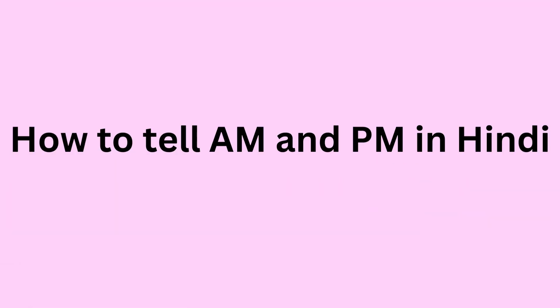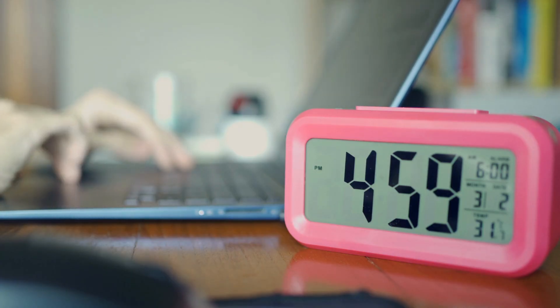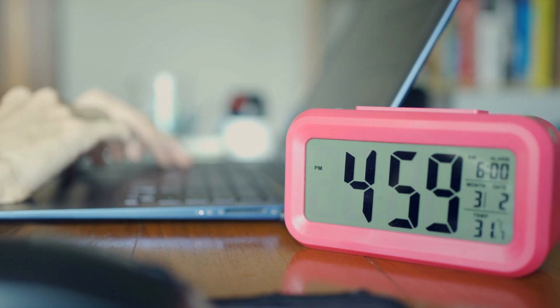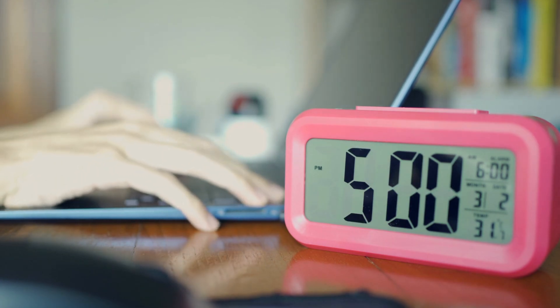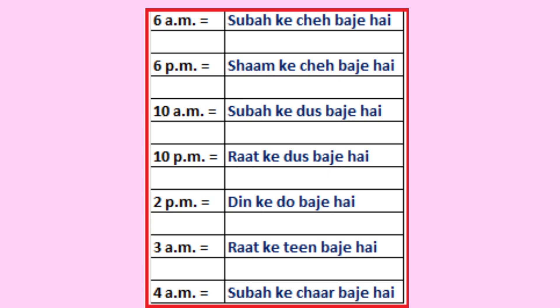How do we tell AM and PM in Hindi? In Hindi, we don't have AM and PM. Instead, we use the phases of the day along with the time. 6 AM is subah ke 6 baje hain. 6 PM is shaam ke 6 baje hain. 10 AM is subah ke 10 baje hain. 10 PM is raat ke 10 baje hain. 2 PM is din ke 2 baje hain, or dopahar ke 2 baje hain.